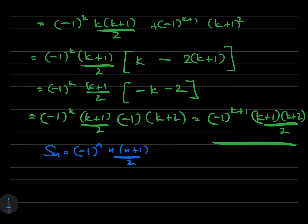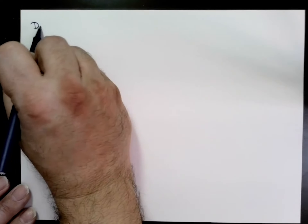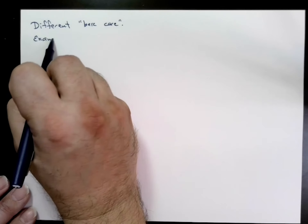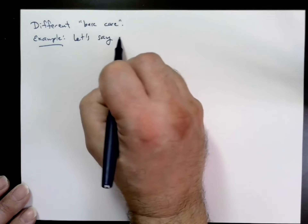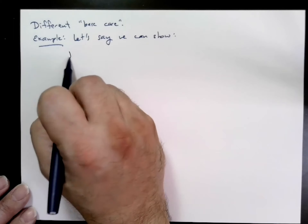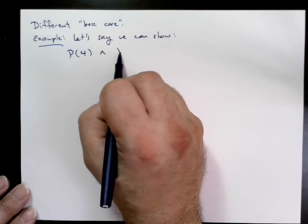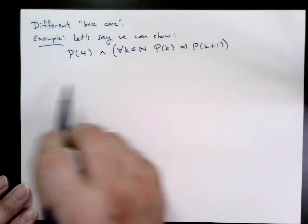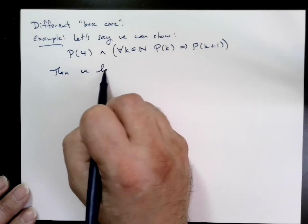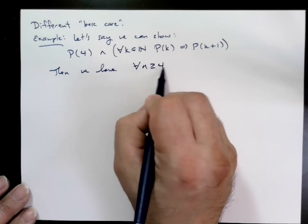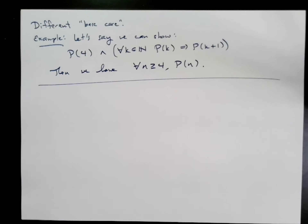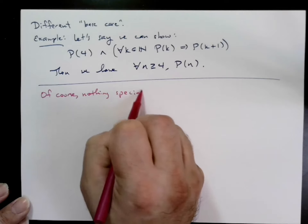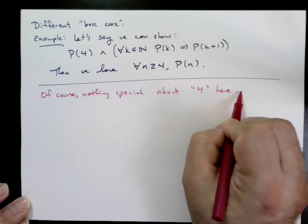Another comment worth mentioning: we can do induction with a different base case. For example, if we can show p(4) is true and do the induction step that p(k) implies p(k+1) for all k, that implies p(n) is true for all n ≥ 4. More generally, whenever you pick a base case and the induction step, that tells you the statement is true starting at your base case. In classical induction we start at 1, but in a particular case we may start somewhere else, like 4. We can start anywhere — that gives us all numbers to the right.